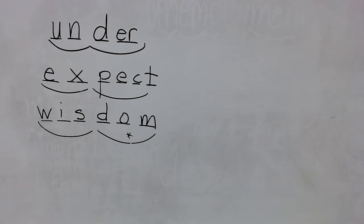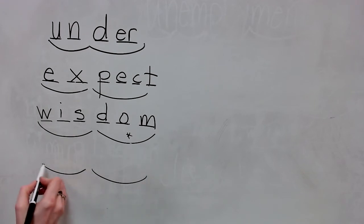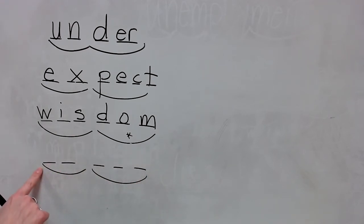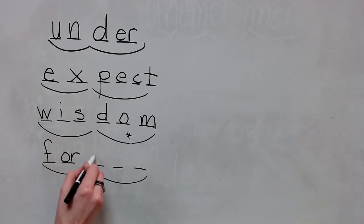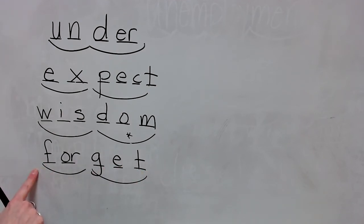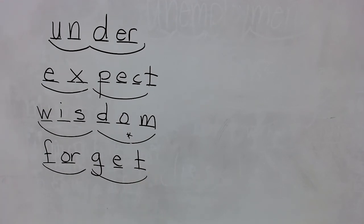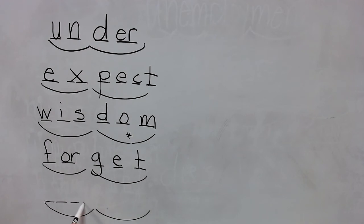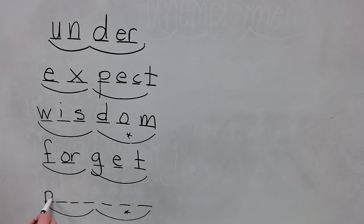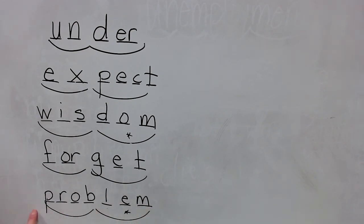The next word is forget. The syllables are for-get. Stretch: for-get. Write the spelling for forget. Check it and correct it. Spell forget. Yes, forget. The next word is problem. The syllables are prob-lem. Stretch: prob — P-R-O-B — and then lem — L-E-M. This is the schwa sound right here. We say problem, it's spelled problem. Write the spelling for problem. Check it and correct it. Spell problem. Yes, problem.